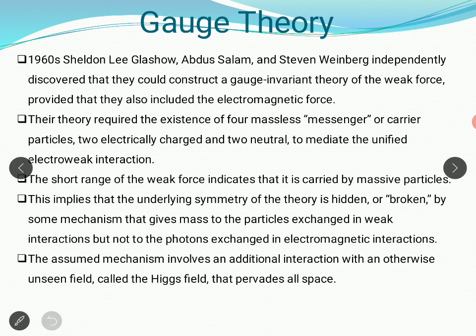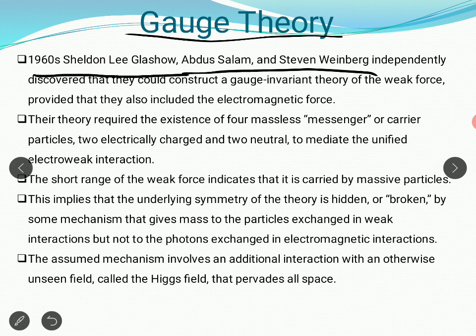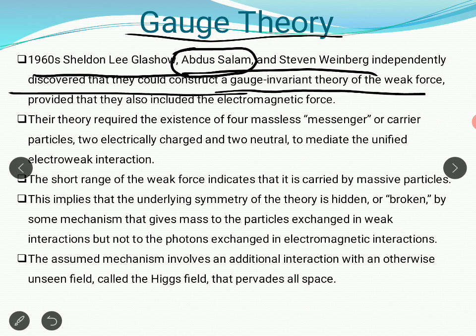In the 1960s, Sheldon Lee Glashow, Abdus Salam, and Steven Weinberg — Abdus Salam being one of the great theoretical physicists from Pakistan who also received the Nobel Prize — independently discovered that they could construct a gauge-invariant theory even for the weak force. Gauge theory was prevalent long before people talked about weak force or high-energy physics, but they saw that gauge theory is applicable even to weak forces. However, if we want to apply it to the weak force, we have to include the electromagnetic force — and as a result, the combination is actually possible as per the theory.